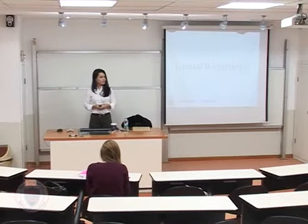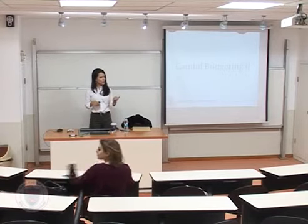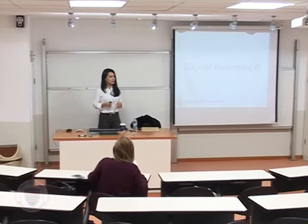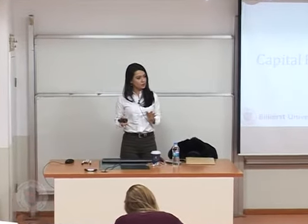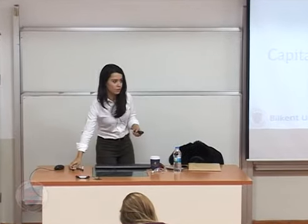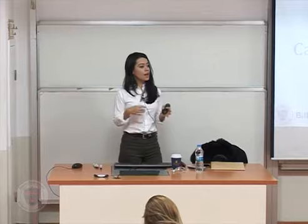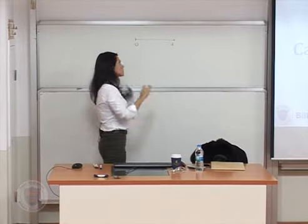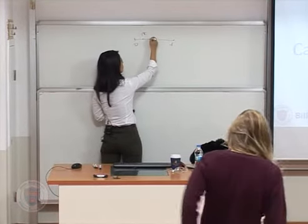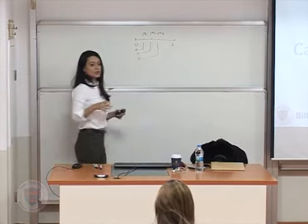Okay, so if you're ready, let's start with our last chapter. If you remember, last Tuesday we talked about the first chapter of capital budgeting and we talked about different methods to pick which investments are good, which investments are bad. What we are trying to do is come up with cash flows related to the investments, and once we have the cash flows for the period of the investment life, we discount all those cash flow values and figure out whether it's a good project or not.